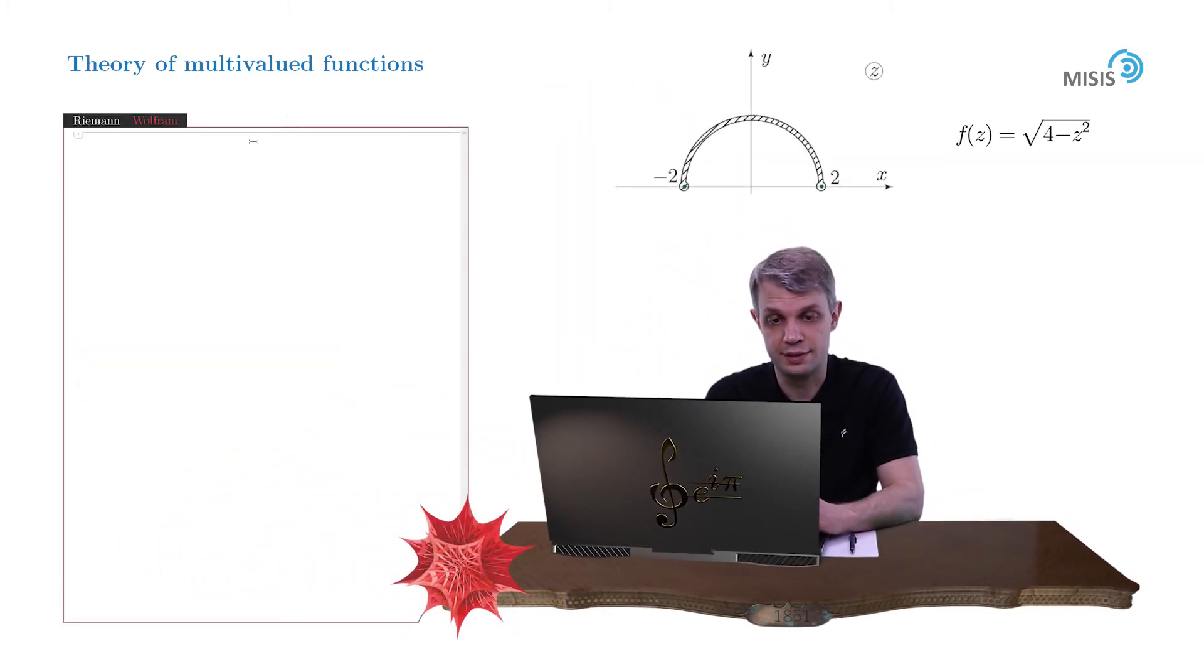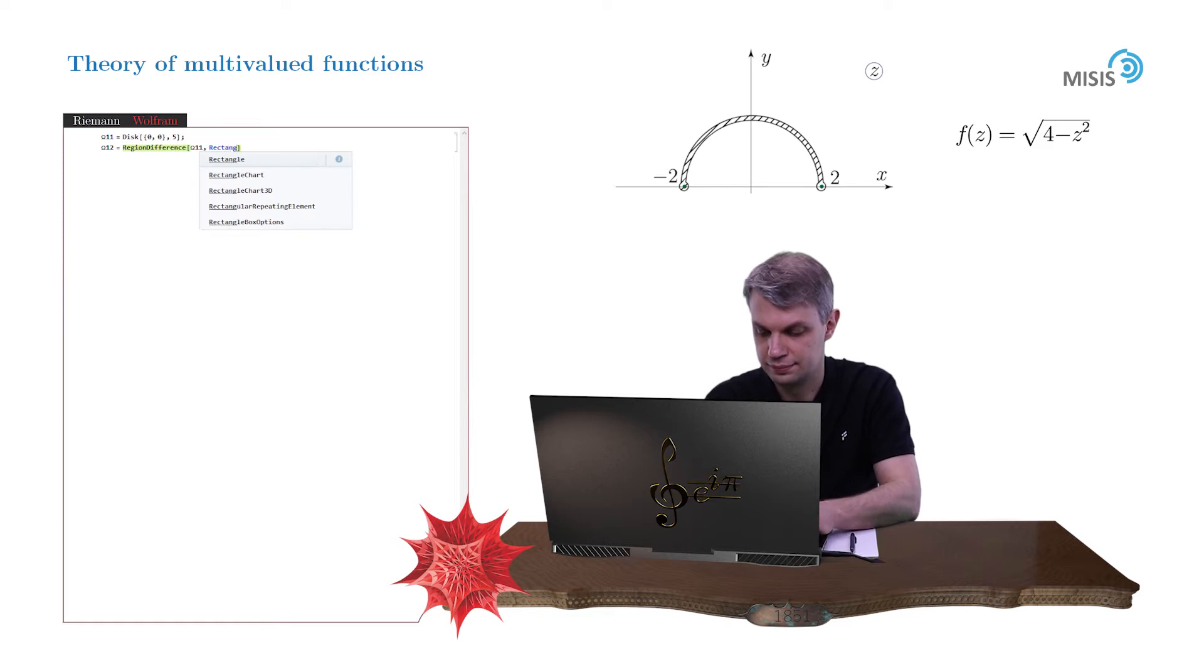First let us introduce the upper half of the disk, but initially the disk itself. Let us denote it as omega 11, which is equal to disk with the center at the origin and say of radius 5. Since we need only upper half of the disk, let us subtract the respective rectangle. So omega 12 is equal to region difference of omega 11 and rectangle with lower left angle minus 6 minus 6 and upper right angle 0 and 6. So let us plot it just to make sure that it's correct.